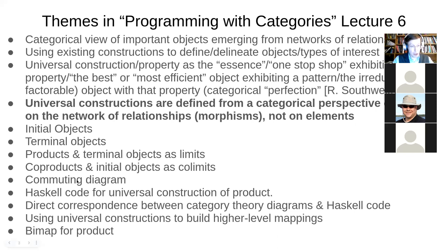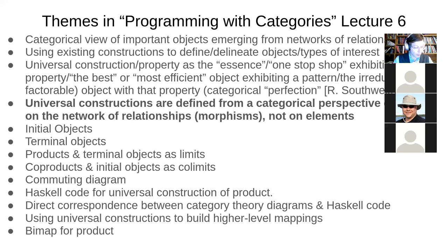Also prominent in the discussion was the idea of a commuting diagram — the fact that if we can get from one object to another via two different ways, the restriction that they have to commute. We saw this with composition earlier, and that for something to be a functor in particular, we want a certain triangle to commute. Here it's quite central to some of these definitions.